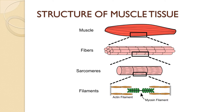Structure of muscle tissue — let's have an overview. Muscle is made up of fibers. A lot of fibers are bound together to form a muscle. These fibers contain sarcomeres, and these sarcomeres are made up of two types of filaments: actin filament and myosin filament, also known as thin filament and thick filament.